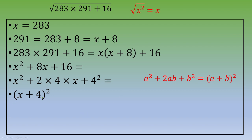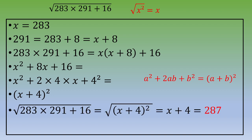Let's recap. Square root of 283 times 291 plus 16 is the square root of (x plus 4) squared, which is x plus 4, and this is 287.